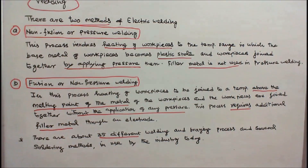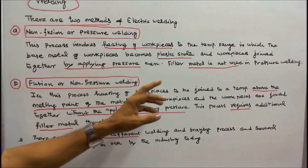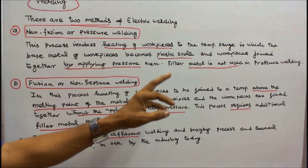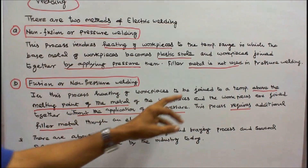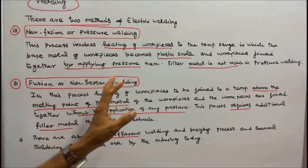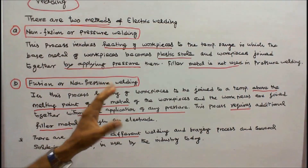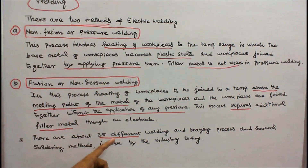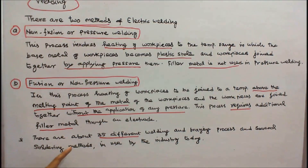The next is fusion or non-pressure welding. In this process, heating of work pieces to be joined to a temperature above the melting point of the material of the work pieces, and the work pieces are joined together without the application of any pressure. This process requires additional filler metal through an electrode. There are about 35 different welding and brazing processes and several sorting methods in use by the industry today.